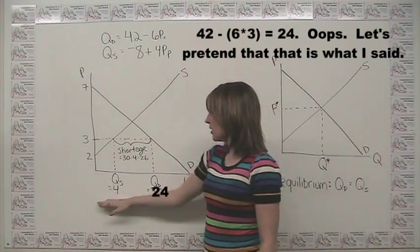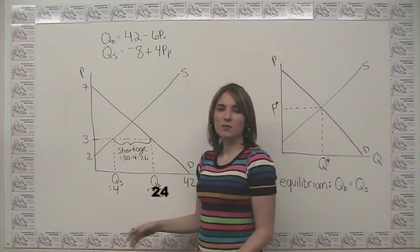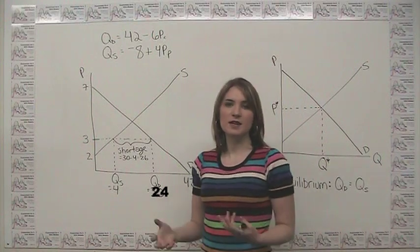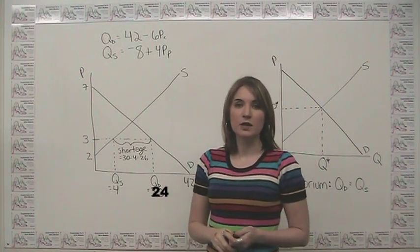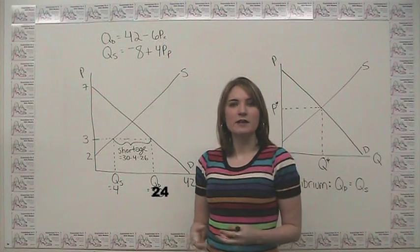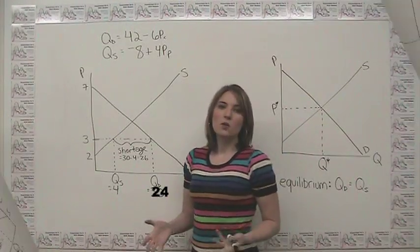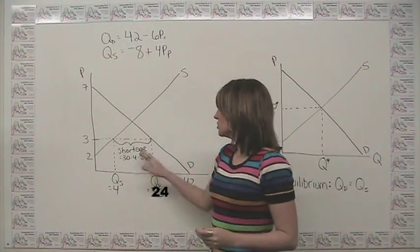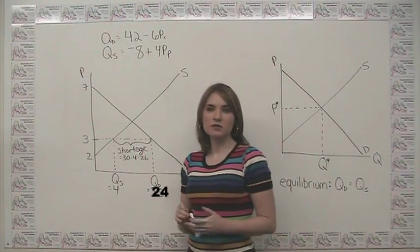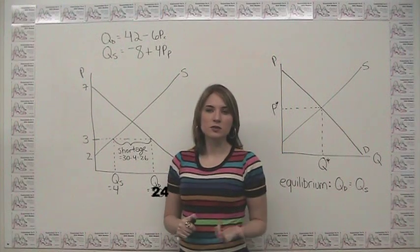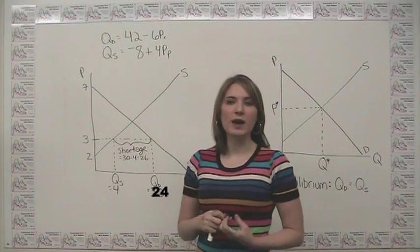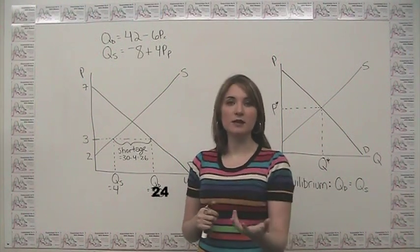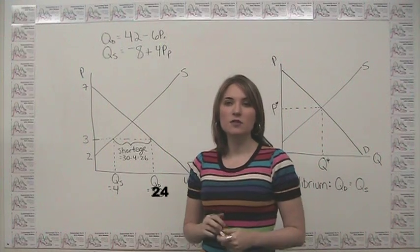So our demand far outpaces our supply and we basically have 30 customers chasing after 4 units of this item. You're going to have people really waiting in line, not able to get what it is that they want. We can think intuitively about what happens when there's a shortage. Usually what happens is a combination of two things. One, in the short term, people often buy up what they can and then resell it for a higher price.